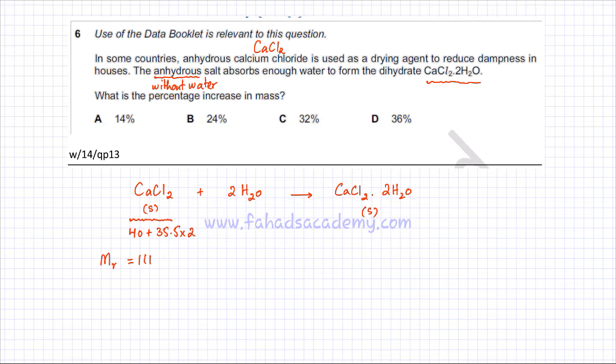And now we're going to find the CaCl2.2H2O, the dihydrate that it's forming. So again, it's 40, plus Cl is 35.5, and there are two of them, so I'm going to multiply that by 2, plus there are two water molecules, so that's 2. And water is - H is 1, O is 16, so 16 plus 1 plus 1, that's 18, so water is 18.